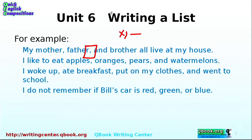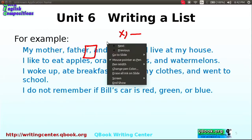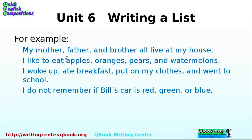Let's look at more examples. 'I like to eat apples, oranges, pears, and watermelons' — notice the comma before 'and.' Another: 'I woke up, ate breakfast, put on my clothes, and went to school.' Now we're getting a little more complicated because these are actions, so it's important to keep that comma on the last one.